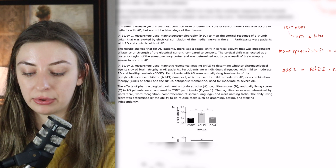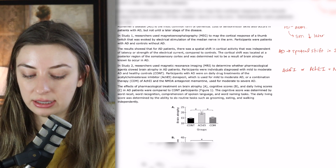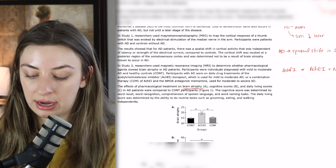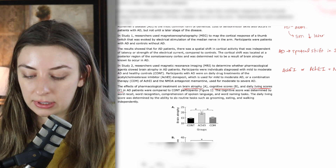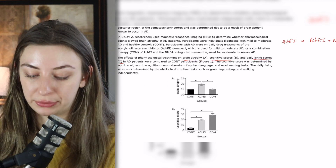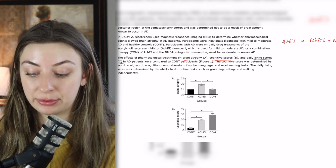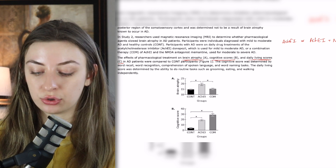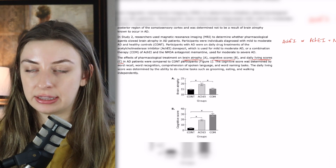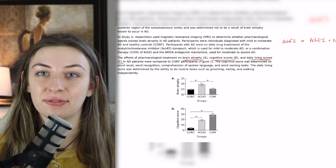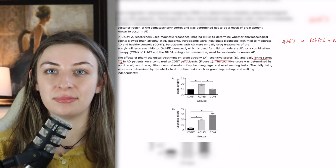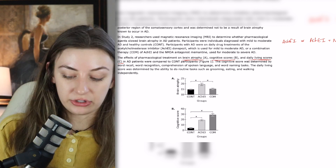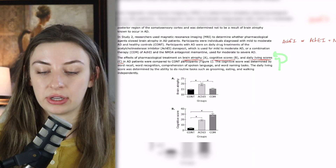The effects of pharmacological treatment on brain atrophy, cognitive scores, and daily living scores were compared to control participants. The cognitive score was determined by word recall, word recognition, comprehension of spoken language, and word naming tasks. The daily living score was determined by the ability to do routine tasks such as grooming, eating, and walking independently. These are the operational definitions — just how they're measuring those outcomes.